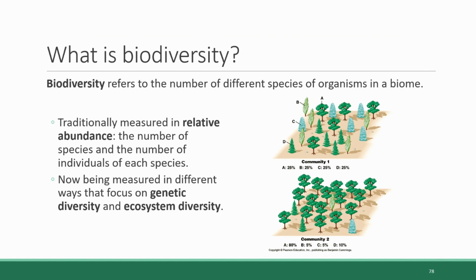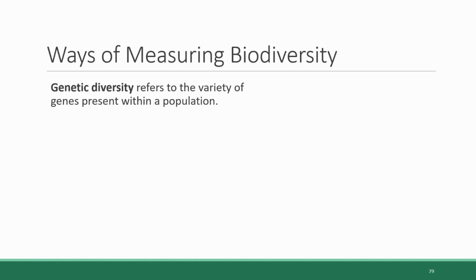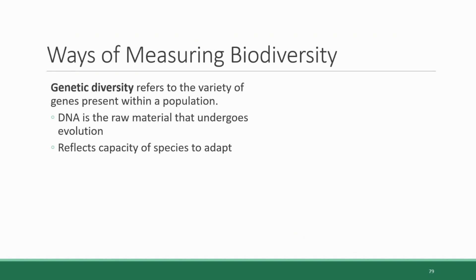Today, relative abundance is only one tool being used to measure diversity. There are other measurements being used to assess biodiversity in different ways, including genetic diversity and ecosystem diversity. Genetic diversity refers to the variety of genes present in a population. We now have gene sequencing technology that allows us to look at how much variety exists within the genetics of a species. This is significant because DNA is the raw material that undergoes evolution, and greater genetic diversity reflects the capacity that a species has to adapt to changing ecosystems and conditions.